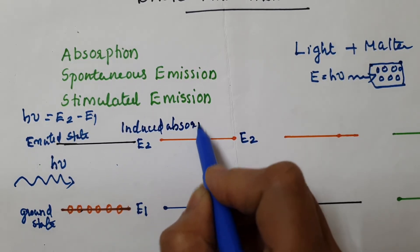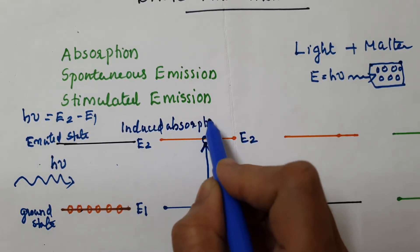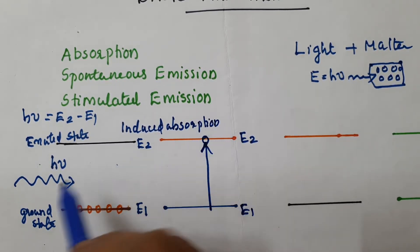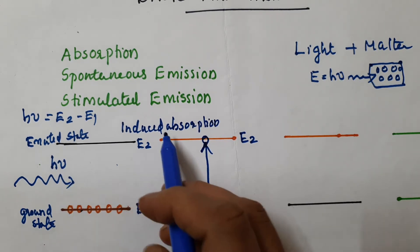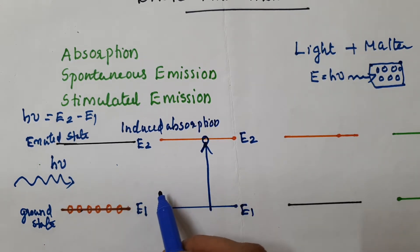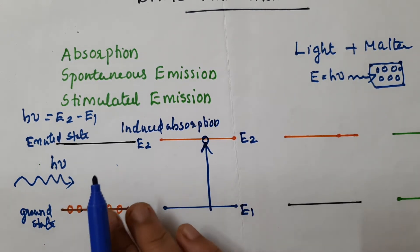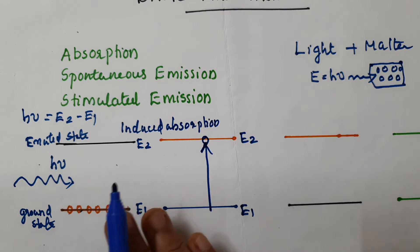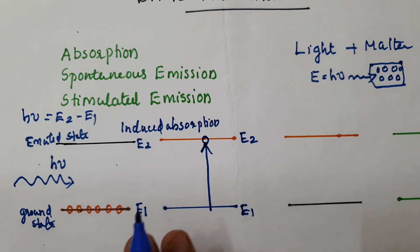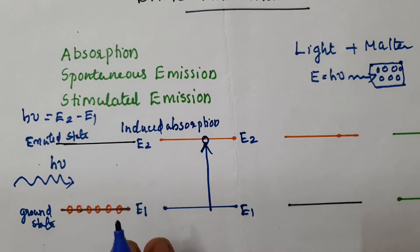The absorption is called induced absorption because it is induced by a photon. Normally, atoms are in the lower state because the lower state is the minimum energy state.